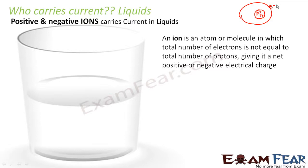But if the atom does not have equal numbers of protons and electrons, then if the number of protons is greater than the number of electrons, the atom as a whole will be positively charged. If the number of electrons is greater than the number of protons, the atom as a whole will be negatively charged. This kind of atom is known as an ion. Whenever any atom loses or gains an electron to become negatively or positively charged, it is known as an ion. So in case of liquids, positive and negative ions carry current.